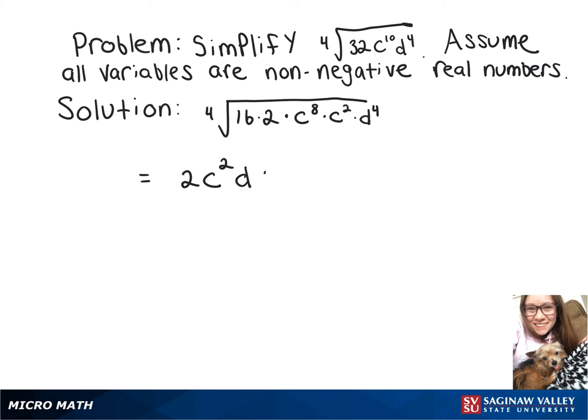And then inside the fourth root that we couldn't simplify any further, we have 2 times c squared.